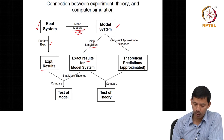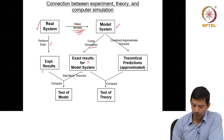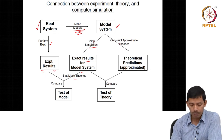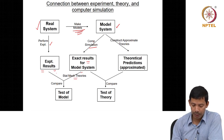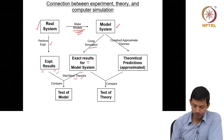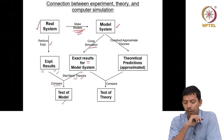Now, what you do is apply statistical mechanical theories to your computer simulation data. Using these statistical mechanical theories, you generate the same thermodynamic quantity for which you have the experimental data. You then compare your experimental data with the data obtained from computer simulation and statistical mechanical theories. If they compare very well, you can say with confidence that your model system was very good.